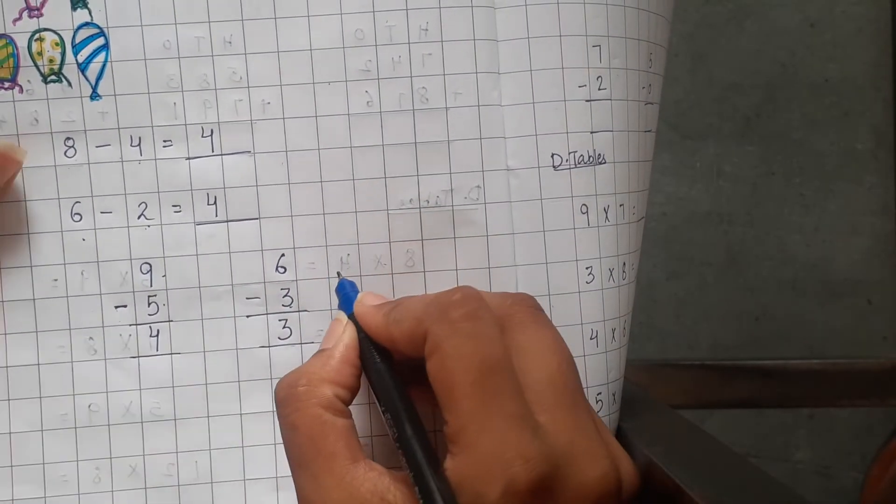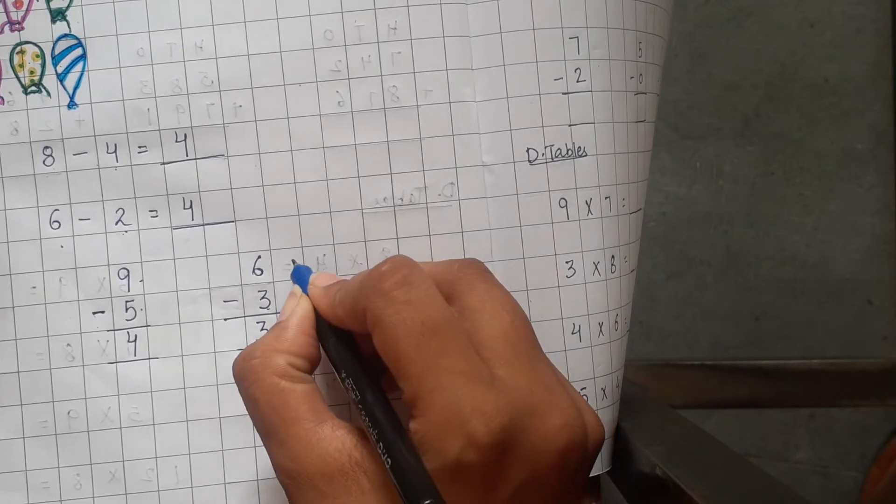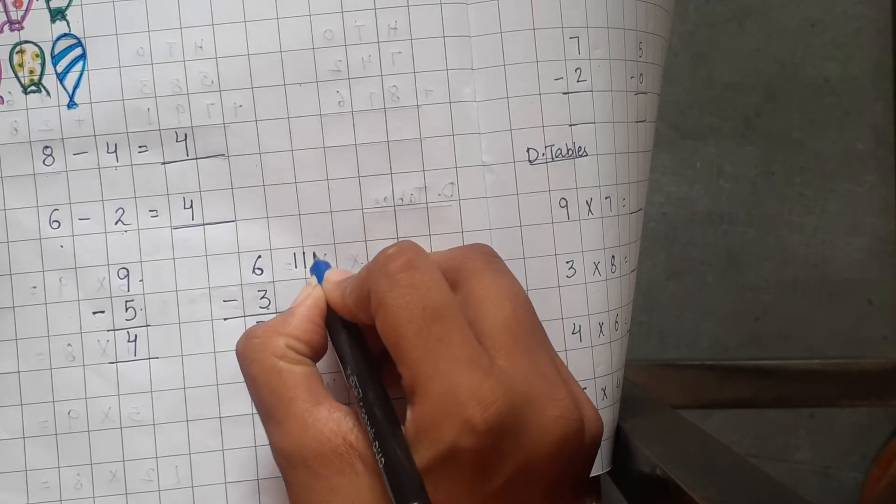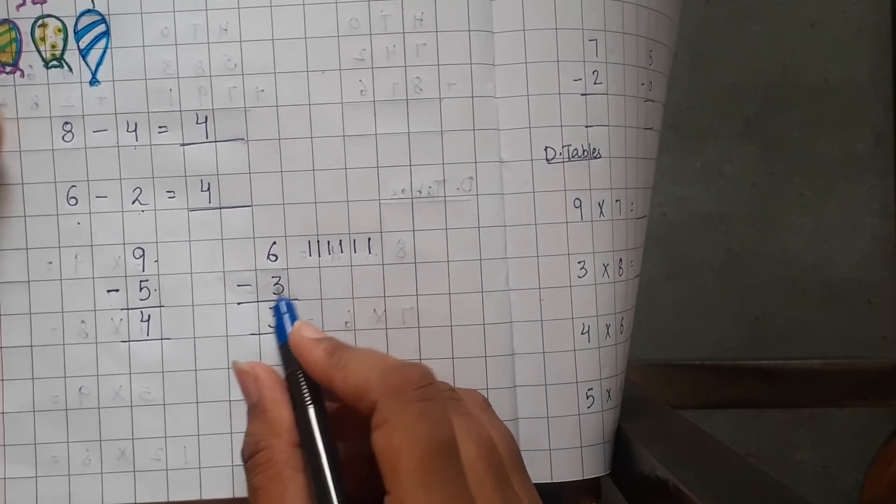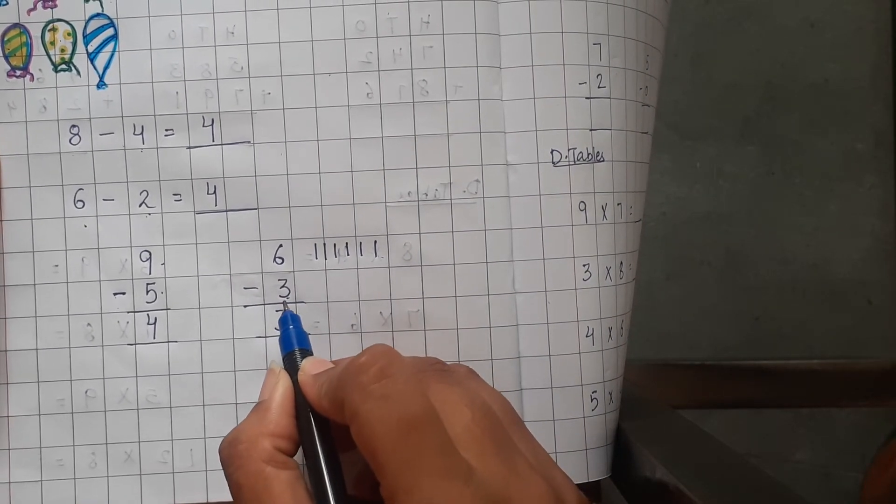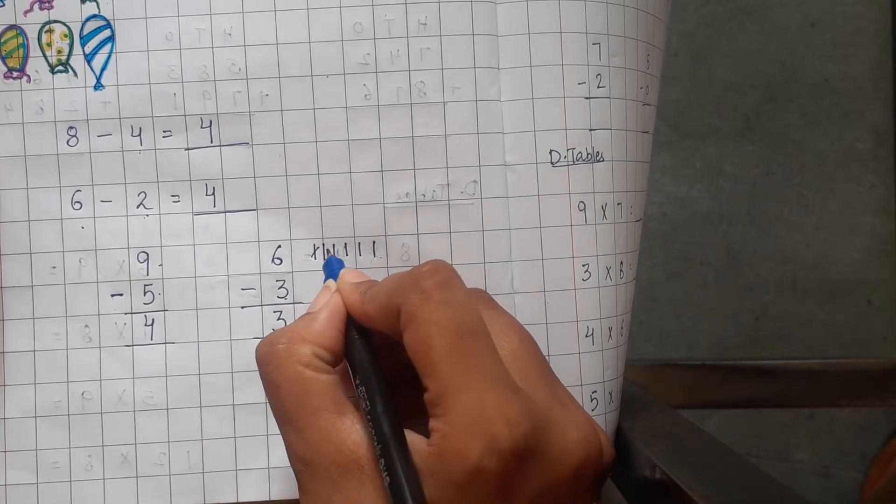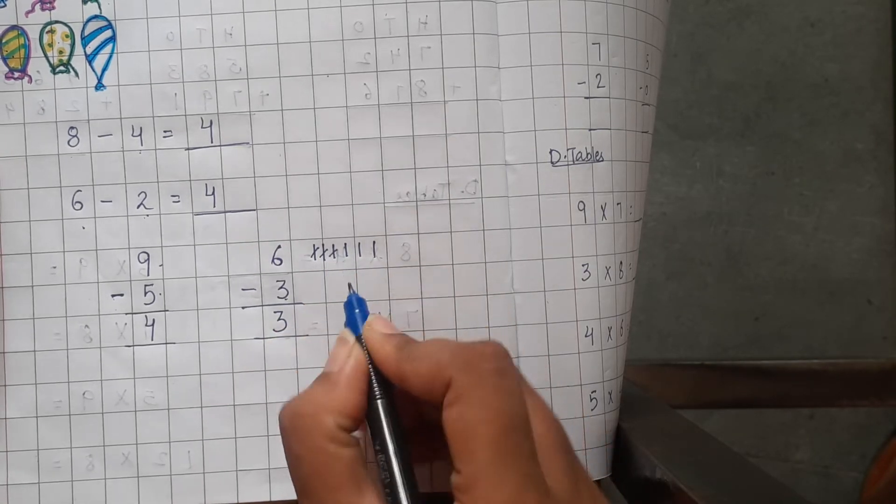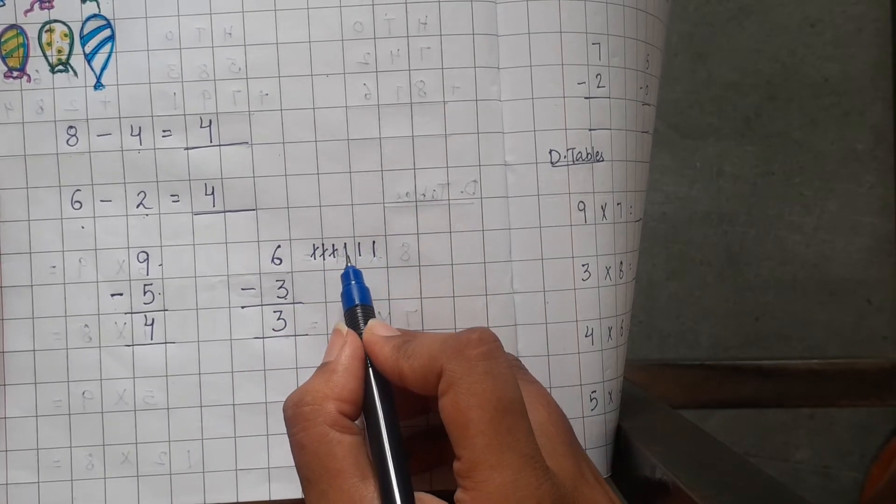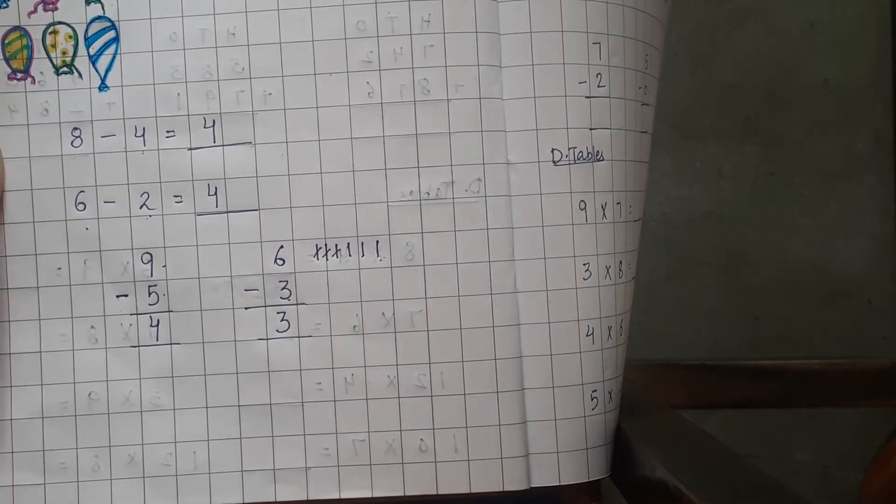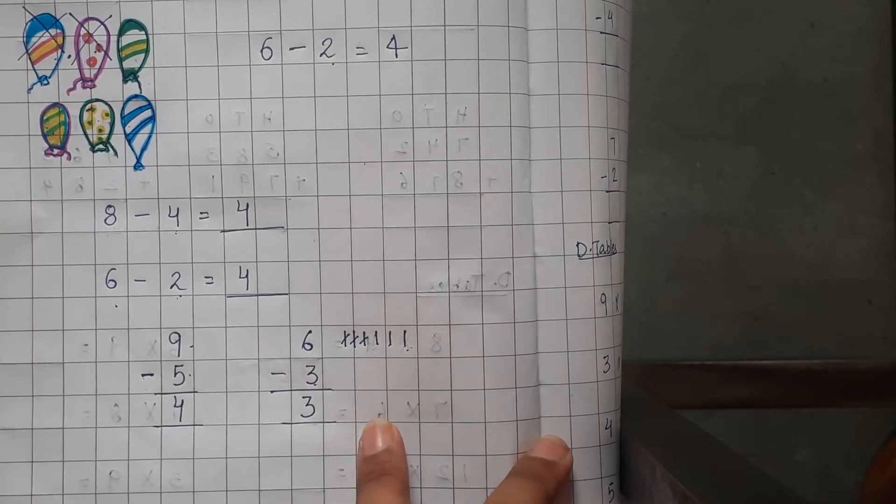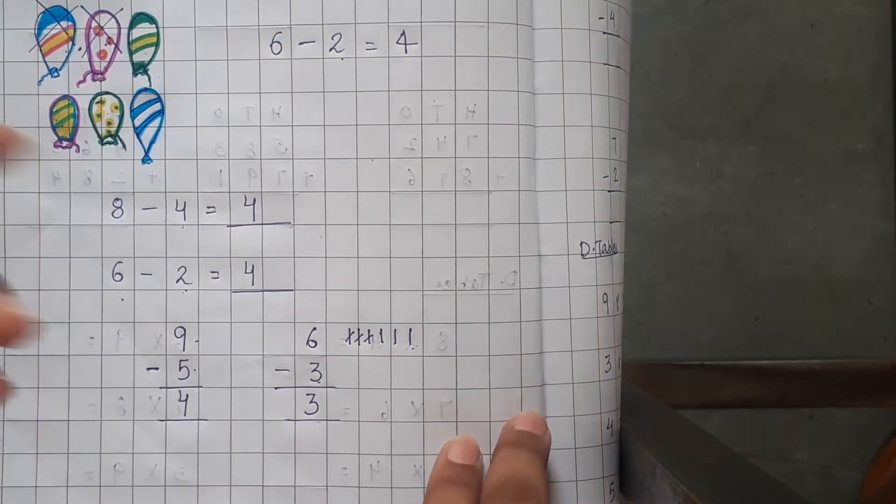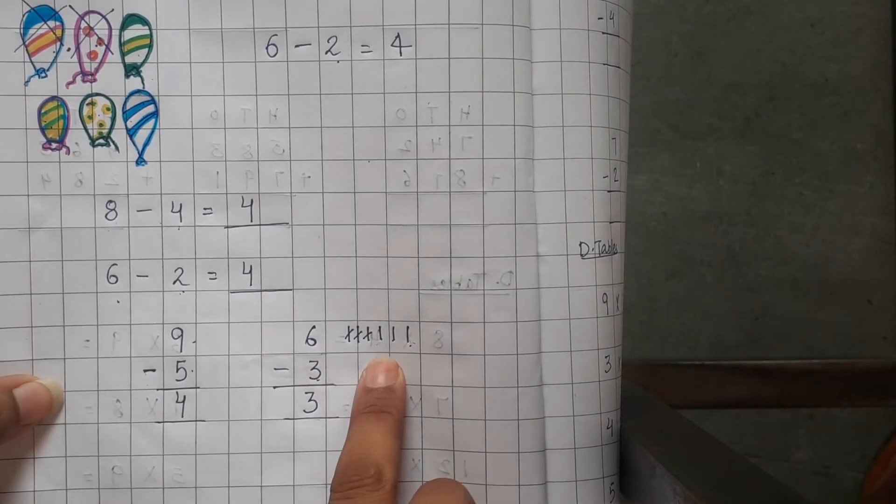You can also draw lines like this: 1, 2, 3, 4, 5, 6. We have 6 lines and out of this, we have to cut 3 lines: 1, 2, 3. So, 3 lines are left: 1, 2, 3. So, you can use any of these methods to subtract. The best way is to use your fingers or you can use these lines.